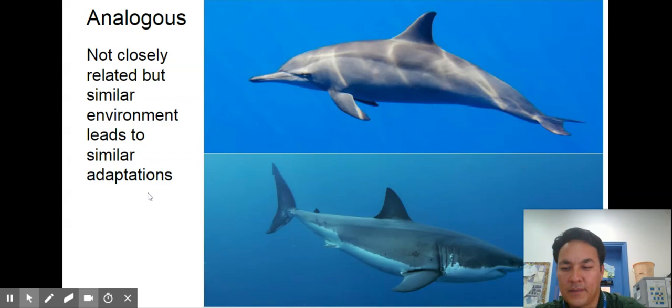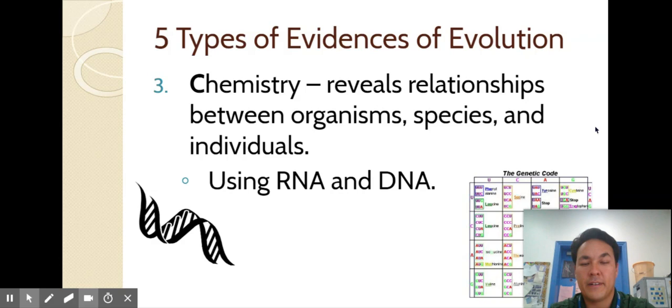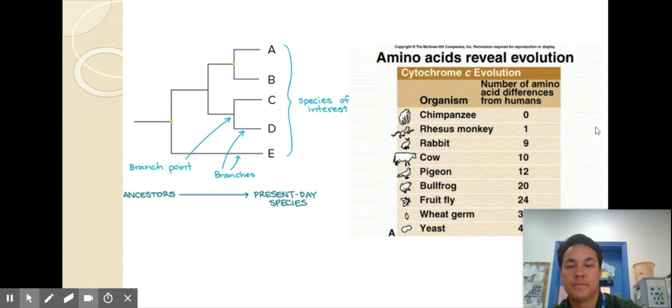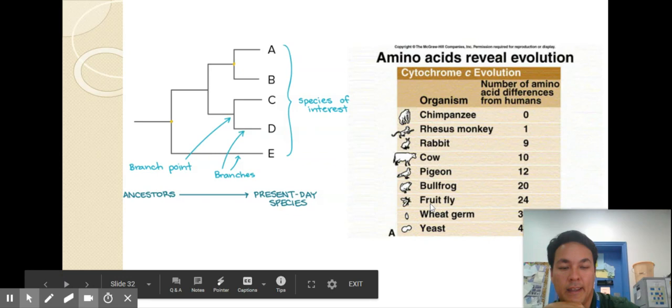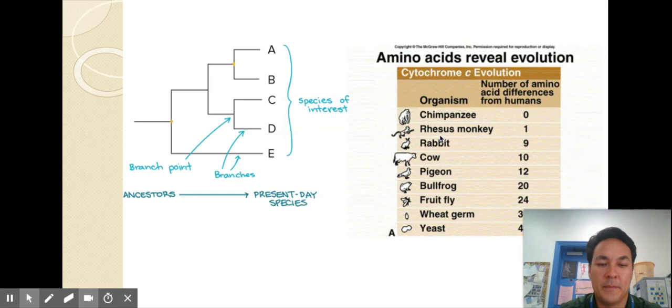Okay we also talked a little bit about biochemistry we looked at a table showing similarities and differences in cytochrome c amino acids. We haven't gone over DNA and RNA yet in the course but we'll learn how to read it and how it functions and the more similar the DNA is the more closely related the two species are. All right and so in this one you could say that the this is amino acids reveal evolution number of amino acids differences from humans so we are more closely related to chimpanzees and rhesus monkeys than to say a fruit fly.